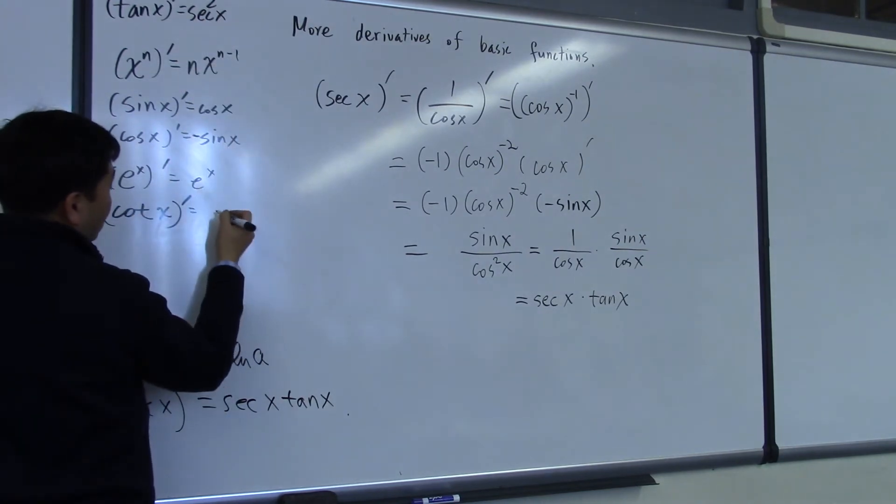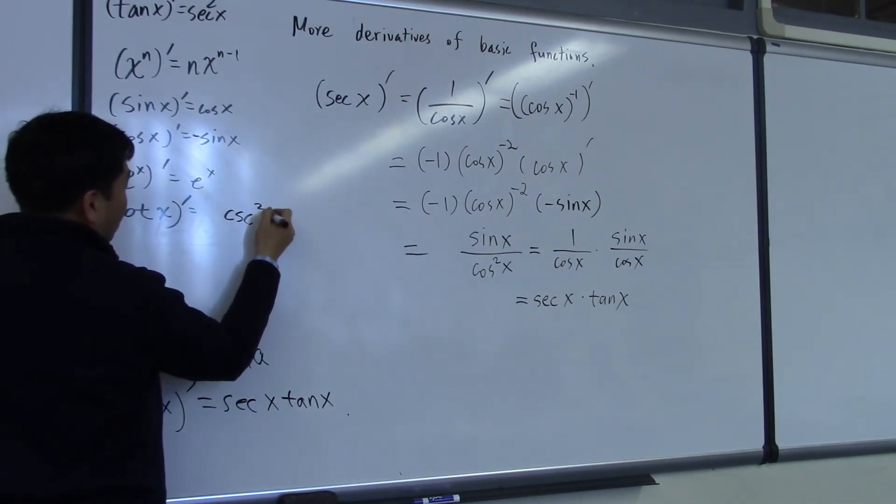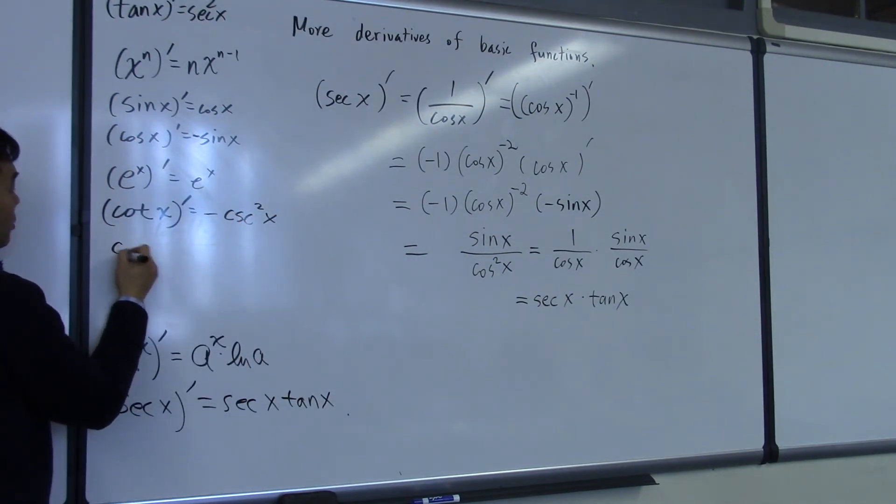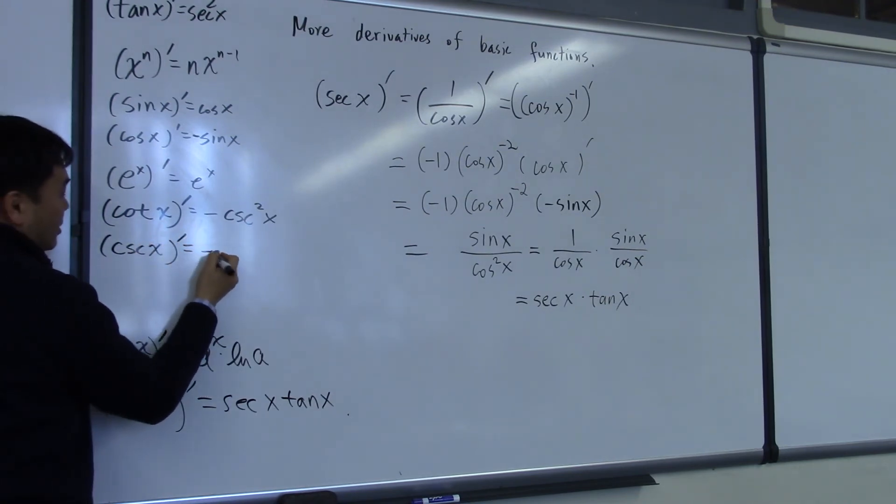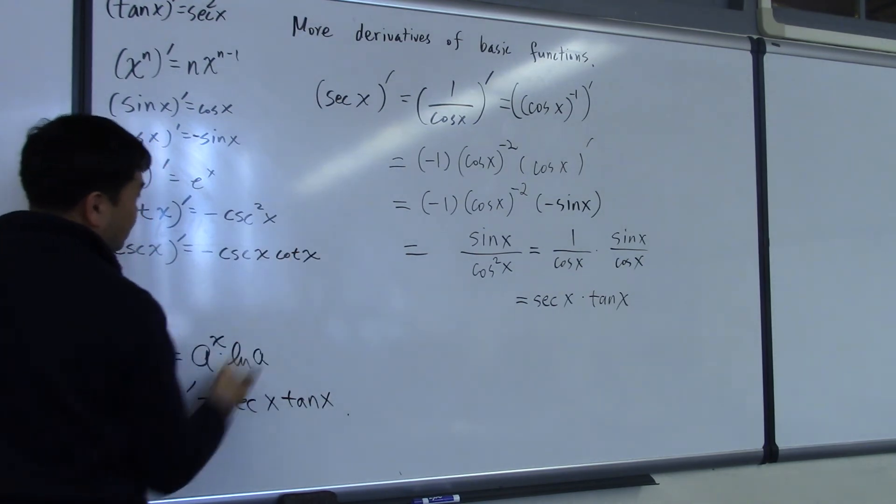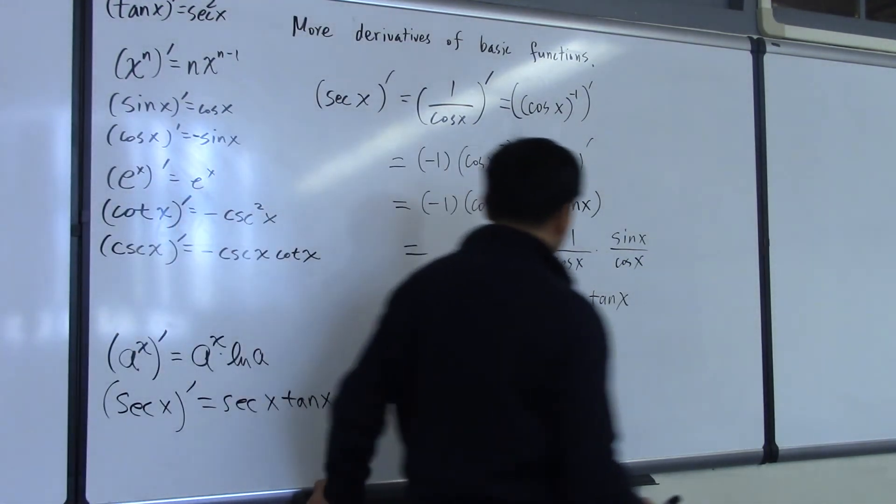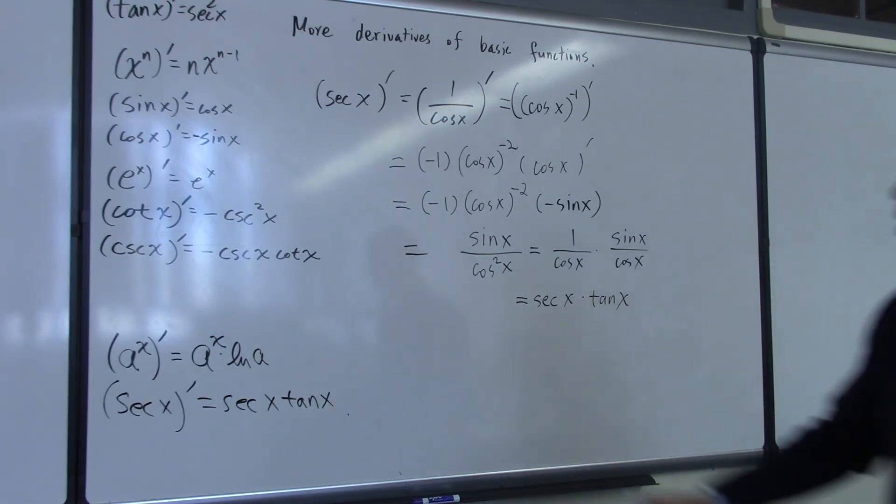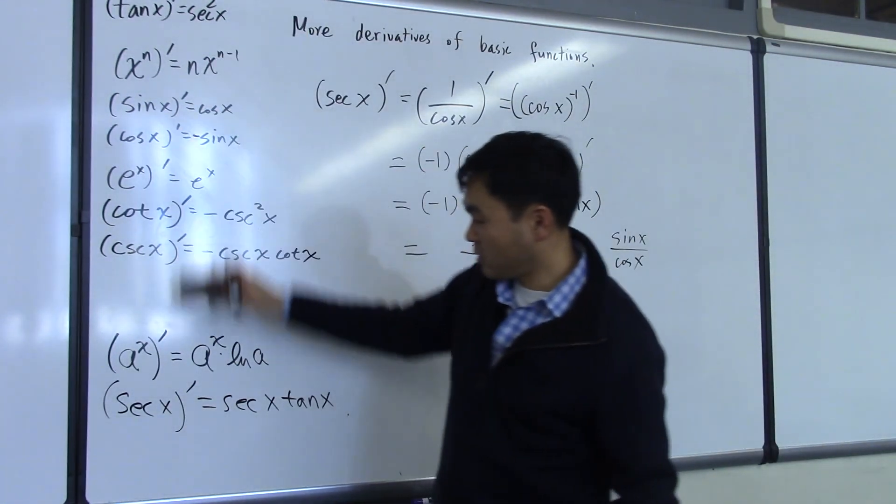And the result is very similar also. Instead of secant squared, you're going to get cosecant squared with a minus. And the same thing for cosecant of x prime. If you differentiate this, you're going to get negative cosecant of x, cotangent of x. And you have to memorize everything on this list.